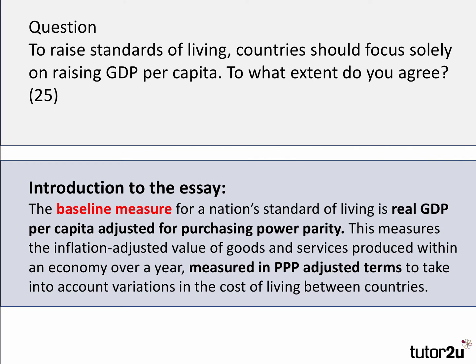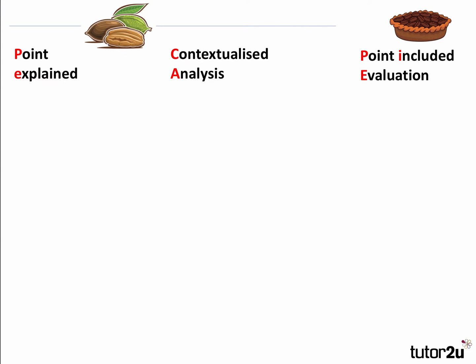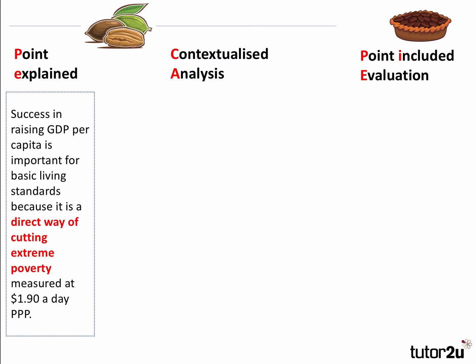Start with a clear introduction: the baseline measure of living standards is real national income — real GDP per capita adjusted for purchasing power parity (PPP). This measures the inflation-adjusted value of goods and services produced within a country over a year in PPP-adjusted terms, which tries to account for variations in the cost of living between countries. We then build using the PEAK&PIE approach: Point, Explanation, Analysis (contextualized), then evaluation of the point.